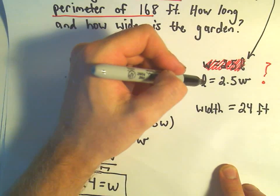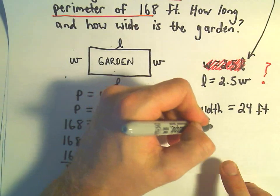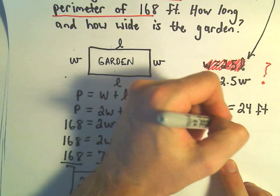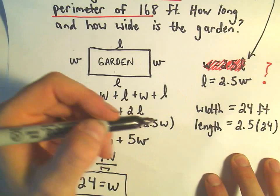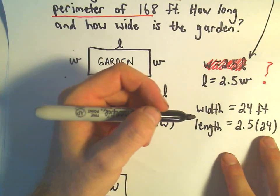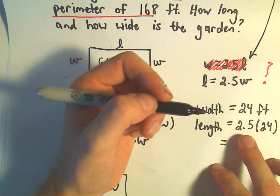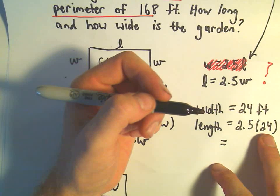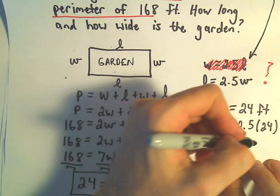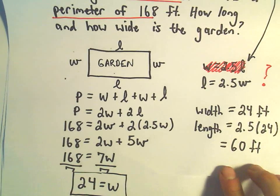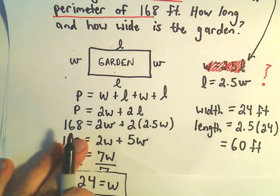And we know that the length is equal to 2.5 times the width. So it says the length will be 2.5 times 24. And if you take 2.5 times 24, well, 2 times 24 is 48. Half of 24 would be 12. So 48 and 12, I'm getting 60. So to me, it says the width should be 24 feet and it looks like the length should equal 60 feet.